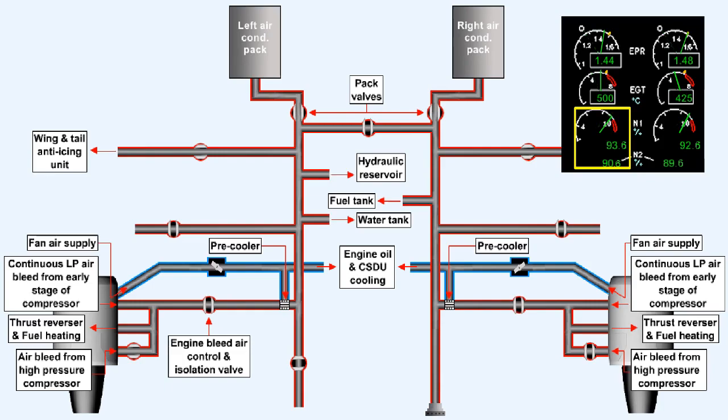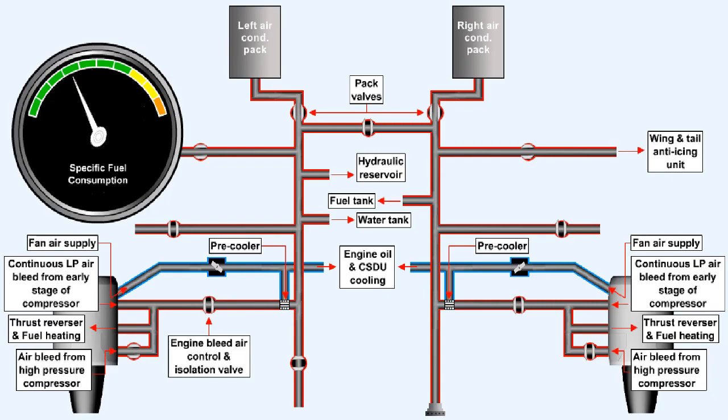Bleeding air from the compressor reduces the load on the turbine. This will have the effect of increasing engine RPM for a given fuel flow. The specific fuel consumption of a gas turbine engine will increase whenever an engine bleed is opened.